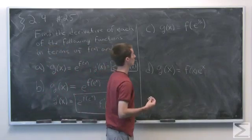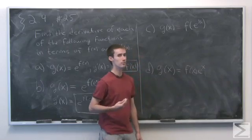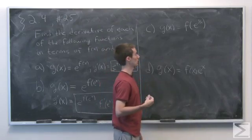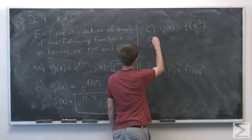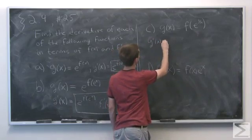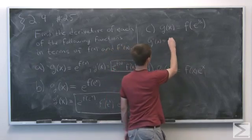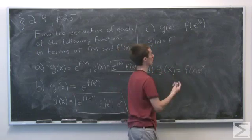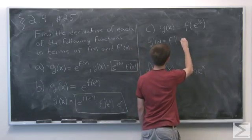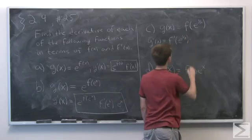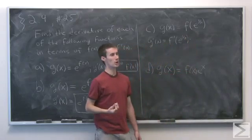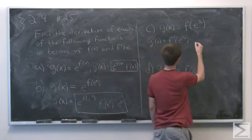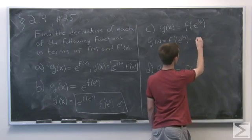And part c, g of x equals f of e to the 1 over x. So again, we have a twofold application of the chain rule. You see that g prime of x, well, we first take the derivative of f and evaluate it at the point e to the 1 over x, and next we multiply by the derivative of e to the 1 over x, which now we need to apply the chain rule one more time.